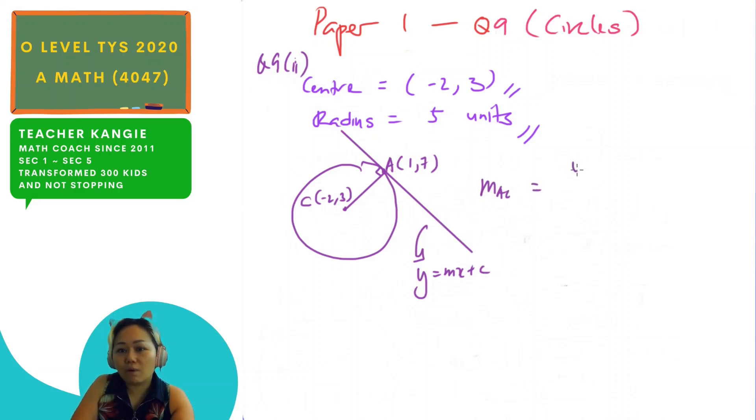So I have to use the formula y1 minus y2 over x1 minus x2. So for this case, it will be 7 minus 3 over 1 minus minus 2. I get 4 over 3. This is the gradient of AC.